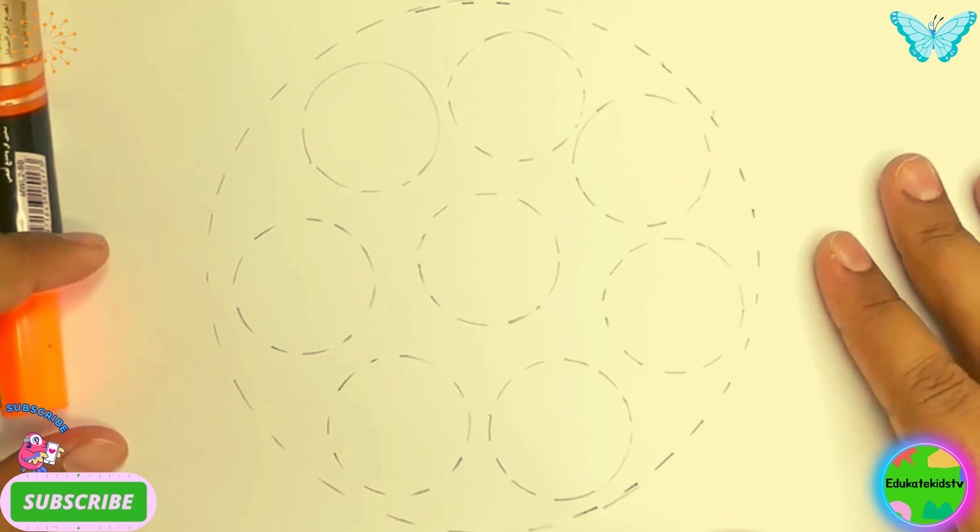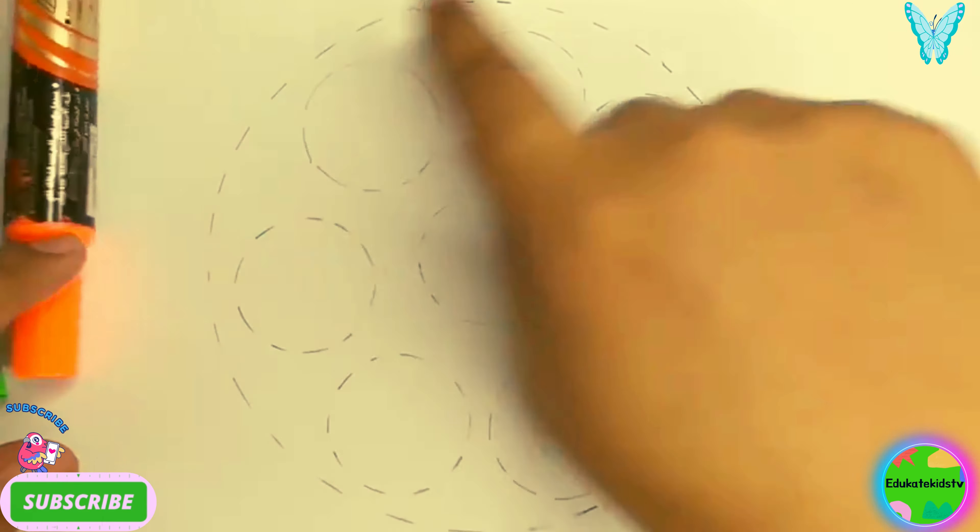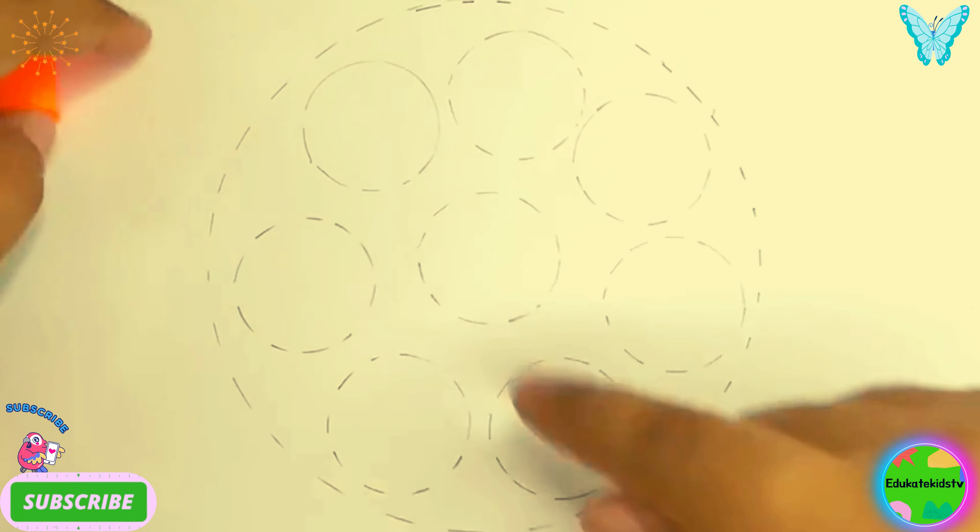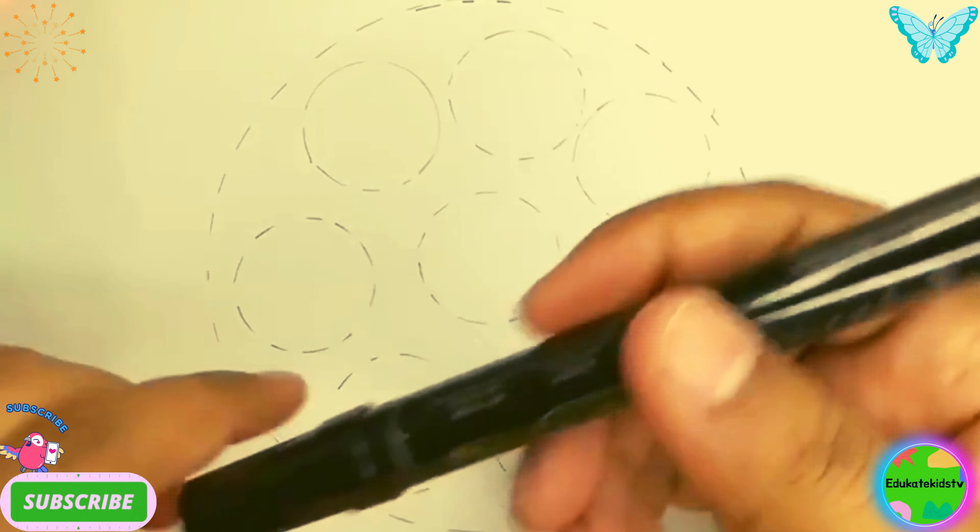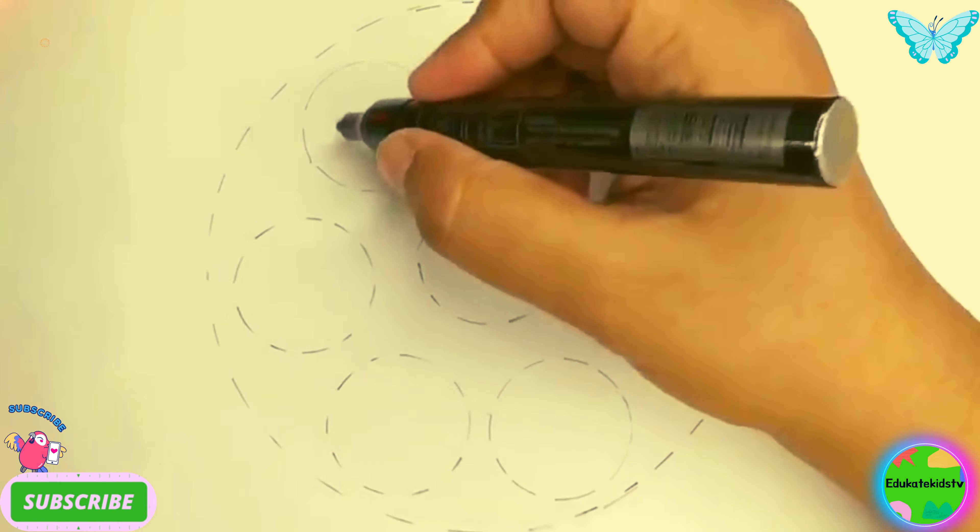Now we have a circle, a bigger one, and then small circles inside it. I'm going to use my black marker to draw these circles. So let's draw them, hooray!